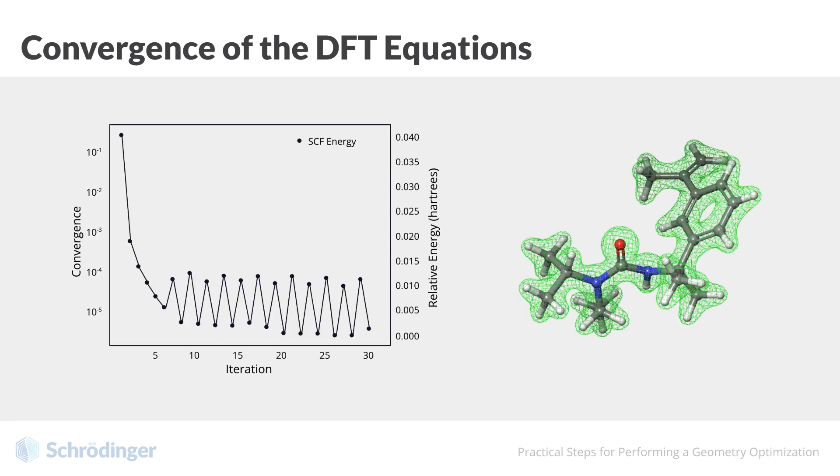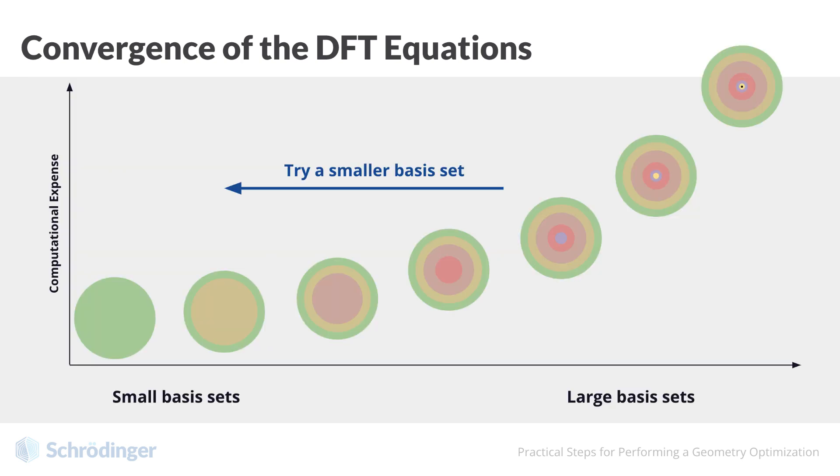The most common failure in solving the DFT equations is that the iterative process does not converge. In such a case, the energy often jumps up and down erratically, and the process runs out of the preset number of steps. A first approach to resolving this problem is to try to converge the DFT equations with a smaller basis set. Then, use the converged solution as a new starting point for the original basis set. It is tedious to do this manually, therefore, Jaguar automates this process with the keyword nofail equals 1.